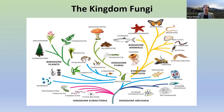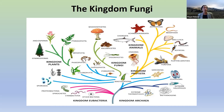A fun fact is that even though we are all very distantly related, the kingdom Fungi is more closely related to the kingdom Animalia — where humans are located — than they are to plants. So you actually have more in common with the mushrooms on your pizza than you do with the tomatoes, though in all honesty you don't have much in common with either one.